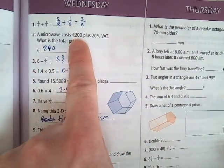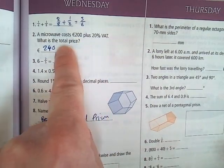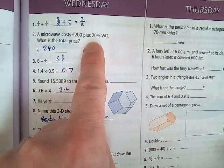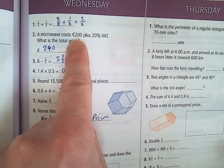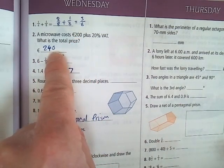Question 2. A microwave costs 200 euros plus 20% VAT. What's the total price? So 20% is one fifth. One fifth of 200 is 200 divided by 5, that's 40. So the total price is 240 euros.